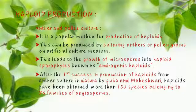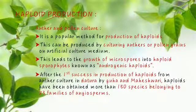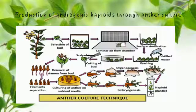After the first success in production of haploids from anther culture in Datura by Guha and Maheshwari, haploids have been obtained from more than 150 species belonging to 23 families of angiosperms.